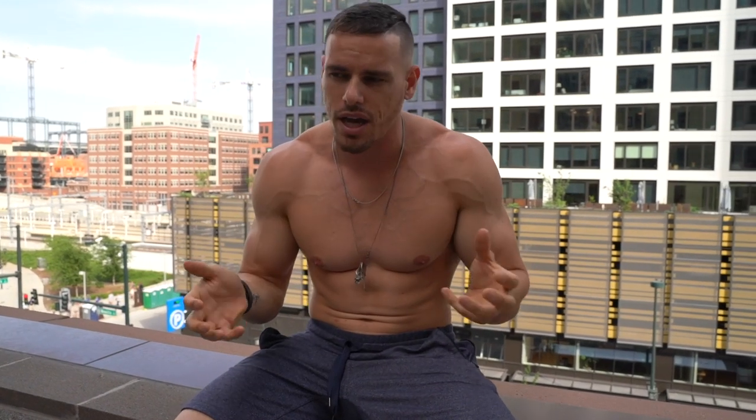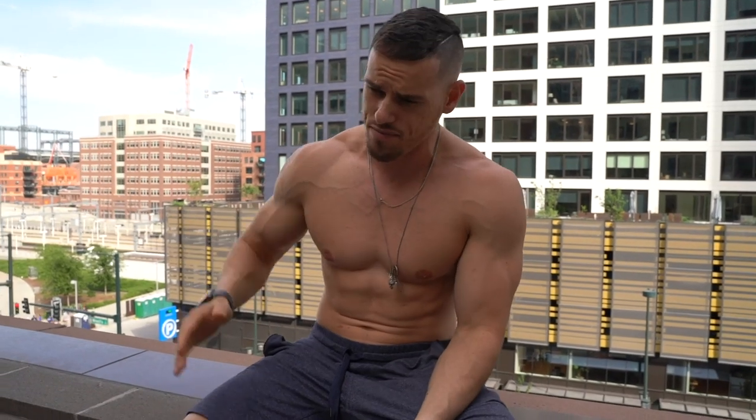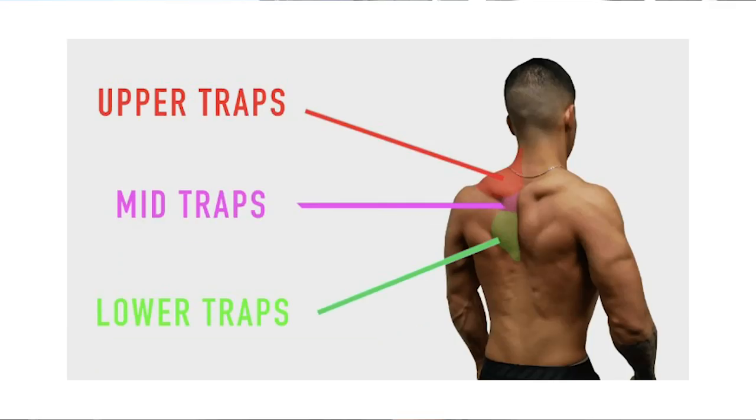Your middle back is really your lower trap — that's that area. Many of us don't even realize — and I didn't realize this for the longest time — that there are three muscles that encompass the trap: three different areas of it. You have the upper trap, you have the middle trap, and you have the lower trap.